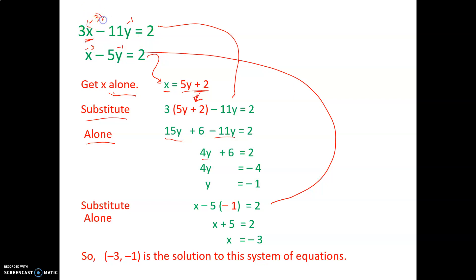So negative 3 and negative 1 is the solution to the system of equations. Substituting negative 3 for x and negative 1 for y into both equations should give true expressions. Negative 9 plus 11 equals 2 — correct. And negative 3 plus 5 equals 2 — correct as well.